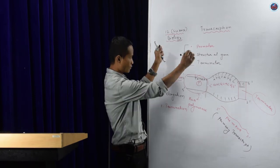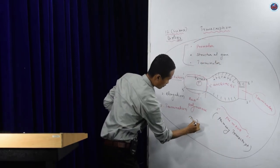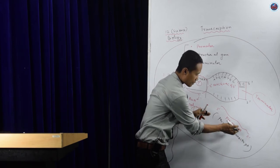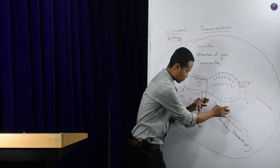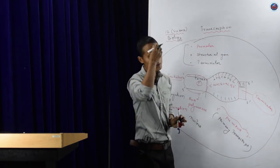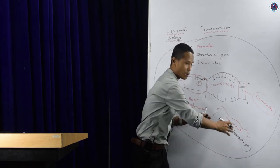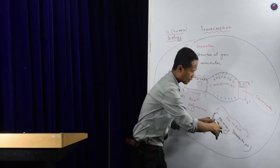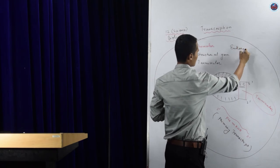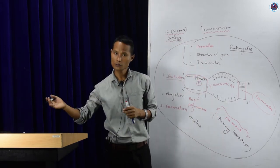Now, this process is happening inside the nucleus. In the case of prokaryotes, since there is no nucleus, there is no boundary, and the mRNA does not undergo further modification. But in eukaryotes, this primary transcript will undergo modification, also called processing.